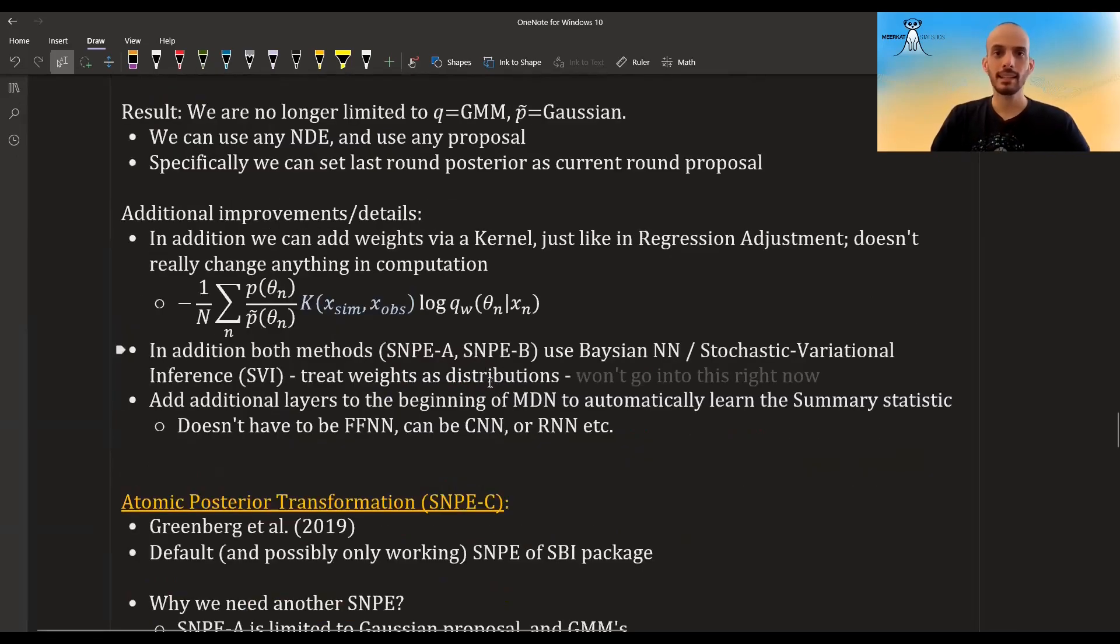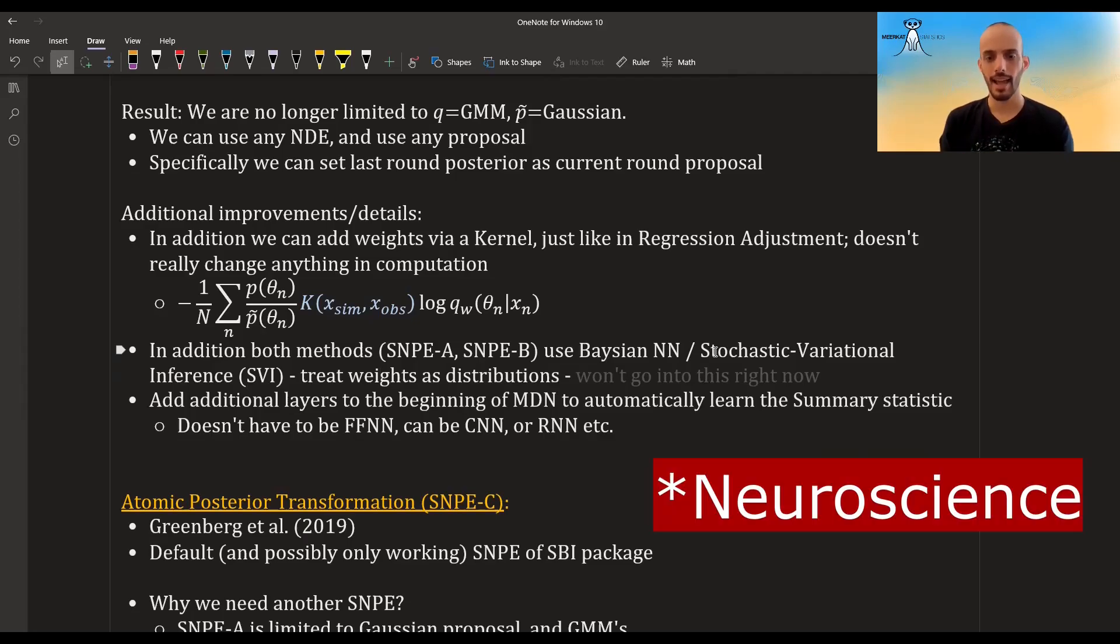There are also additional improvements in this SNPE-B paper. You can also use weights—you can use some kernel just like in the regular regression adjustment. Both papers, they don't use just regular neural networks—they use what I guess you can call Bayesian neural networks. They treat the weights as if they have their own distributions, but I won't touch upon this right now.